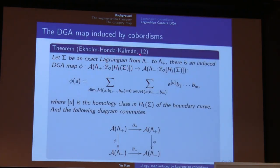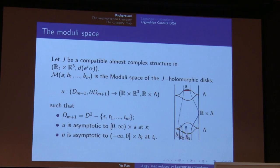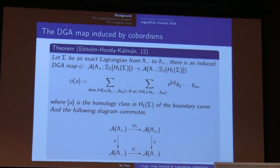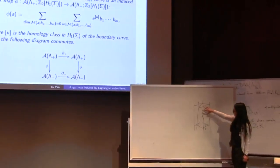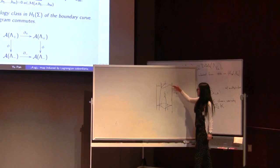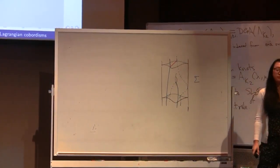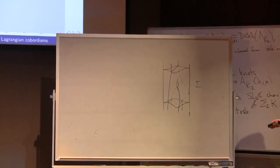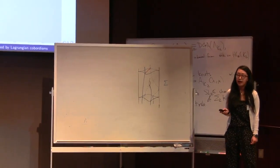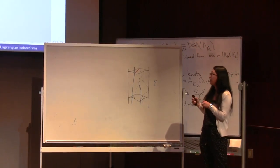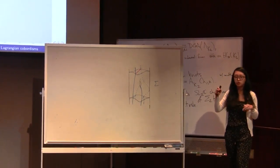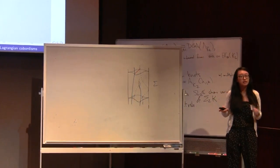A cobordism from λ₋ to λ₊ gives us a DGA map. This map is also defined by a count of holomorphic disks, but now with the boundary on Σ rather than on ℝ × λ. You have λ₊ on top, λ₋ on the bottom, and the holomorphic disk has boundary on Σ with positive and negative strips. This tells us the Chekanov-Eliashberg DGA acts functorially on cobordisms: each Legendrian knot gives you a DGA, and each cobordism gives you a map between DGAs.